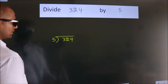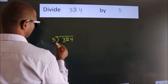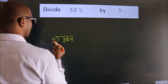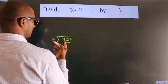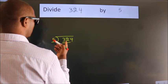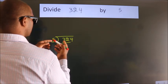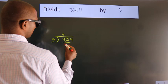Next, here we have 3, here 5. 3 is smaller than 5, so we should take 2 numbers, 32. A number close to 32 in the 5 table is 5 times 6, which is 30.